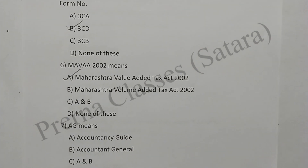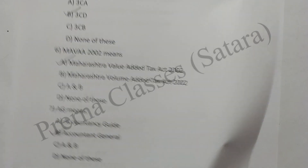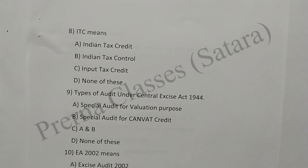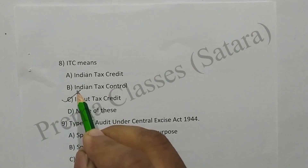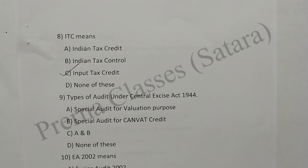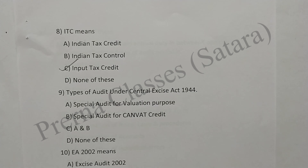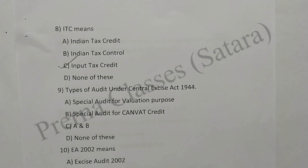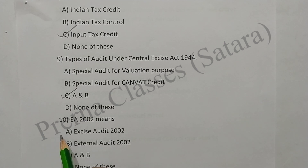Question 7: AG means Accountant General. Option B is correct. Question 8: ITC means Input Tax Credit. Option C is correct. Question 9: Types of audit under Central Excise Act 1944 are special audit for valuation purpose and special audit of CENVAT credit — A and B both. Option C is correct. Question 10: EA 2000 means Excise Audit 2000. Option A is correct.